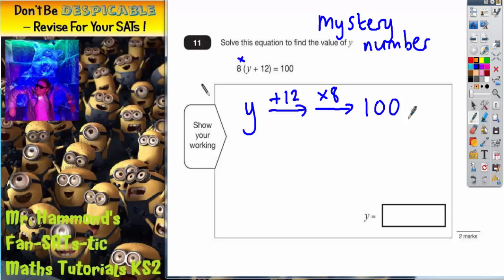All we've got to do now is reverse it back the opposite direction. Because if we can reverse everything, we will get back to what y is. So, the opposite of multiply by 8 on the reverse arrow will be divide by 8, and the opposite of add 12 will be subtract 12.